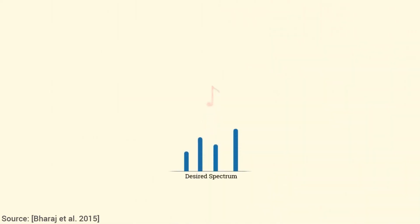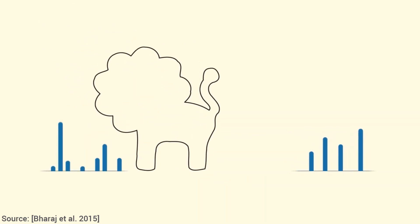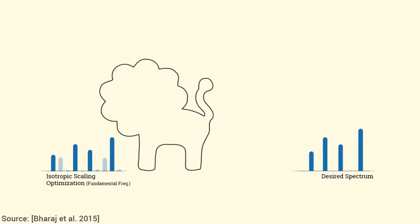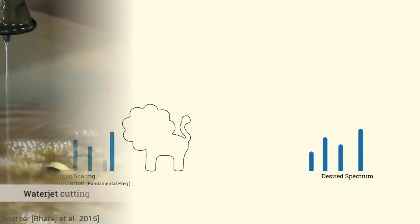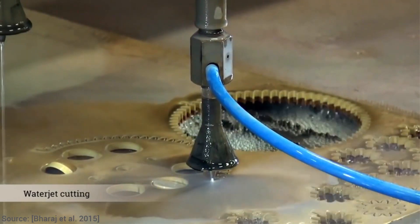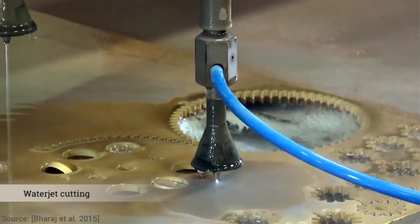Researchers at Harvard, Columbia University, and MIT became interested in designing a computer algorithm to obtain different shapes that lead to the same sounds. And if it's possible, then one should be able to mill or 3D print these shapes and see whether the computation results are in line with reality.